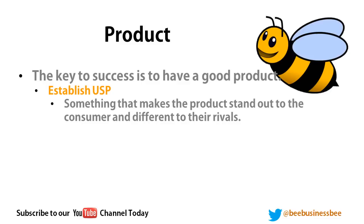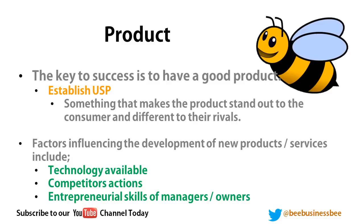The product P is critical — a good product has a USP that makes it stand out from rivals through style, branding, or features. Factors influencing new product development include technology, competitors' actions, and the entrepreneurial skills of managers and owners. Technology costs lots of money requiring capital-intensive production, so you must consider whether you have the capital or need to borrow, and what your competitors will do in response.